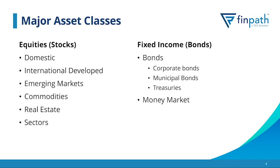First, we should address the major asset classes available to invest in. On the equity side — when we say equity, we're thinking of stocks — those fall under the list on the left side of the screen. Domestic refers to companies generally domiciled here in the United States. International developed are larger companies domiciled in large developed countries such as France, Germany, many European countries, and Canada. Emerging markets are generally smaller countries like Brazil and India, domiciling companies that are part of that emerging markets group — those markets are emerging with a desire to become internationally developed.